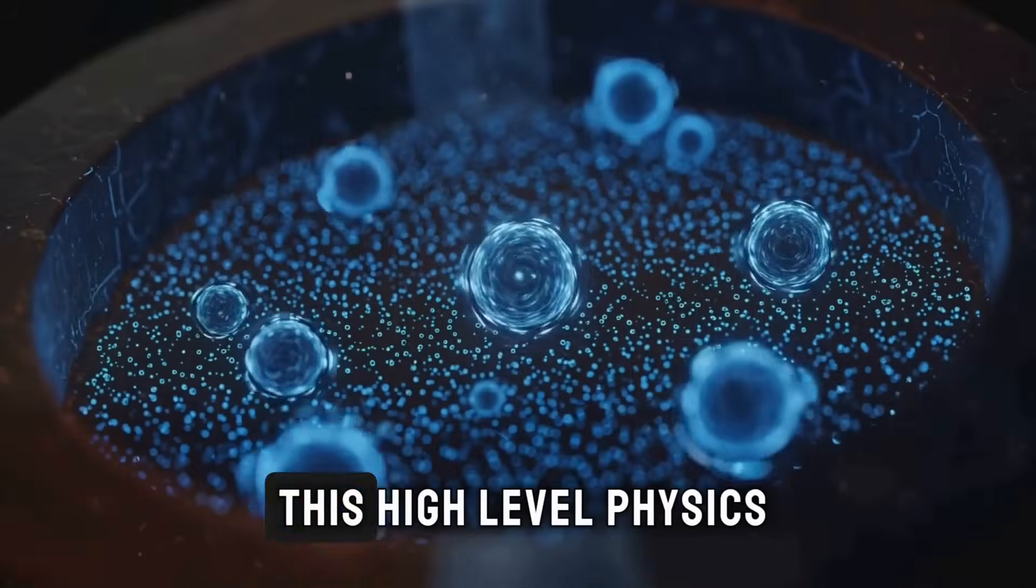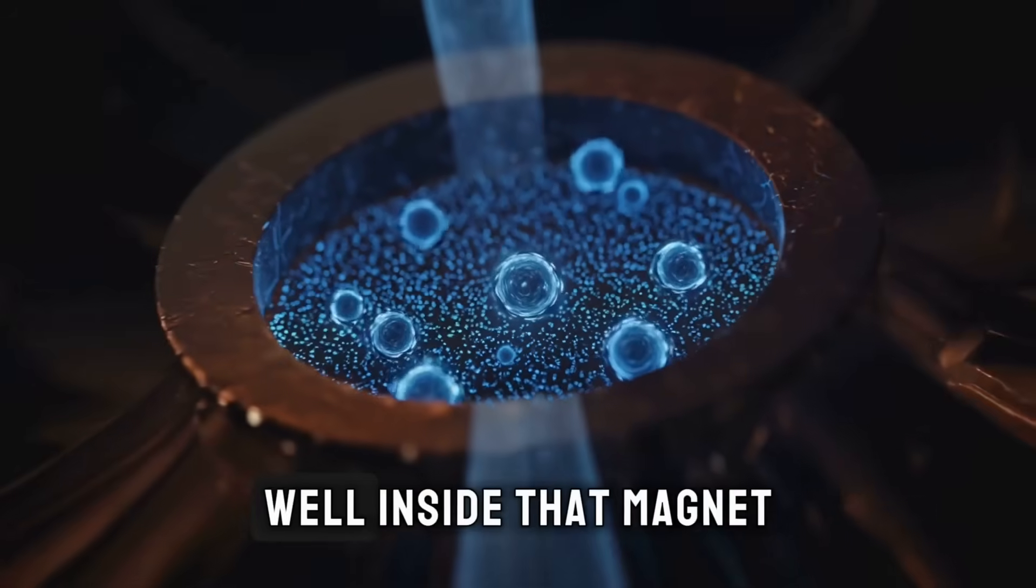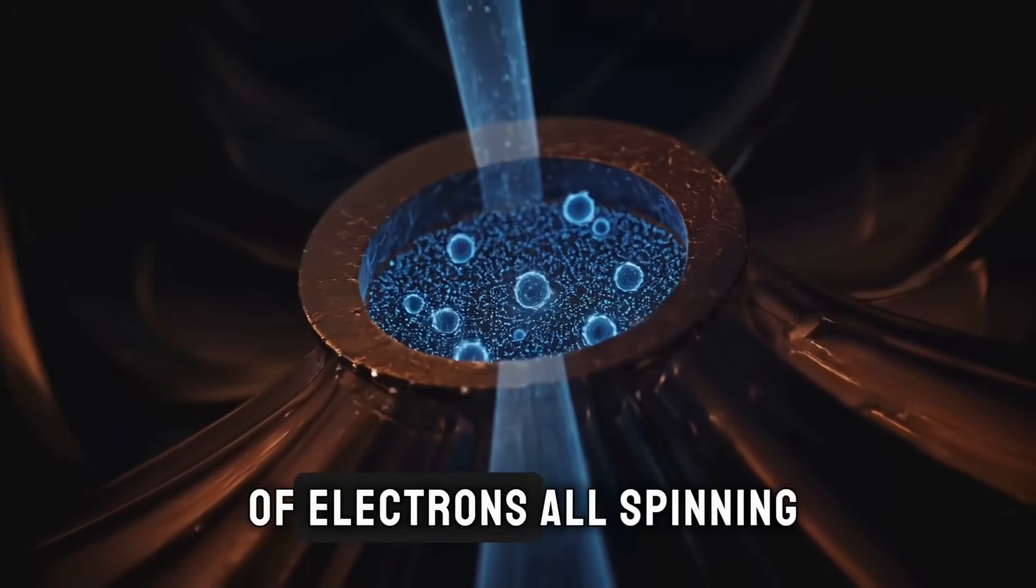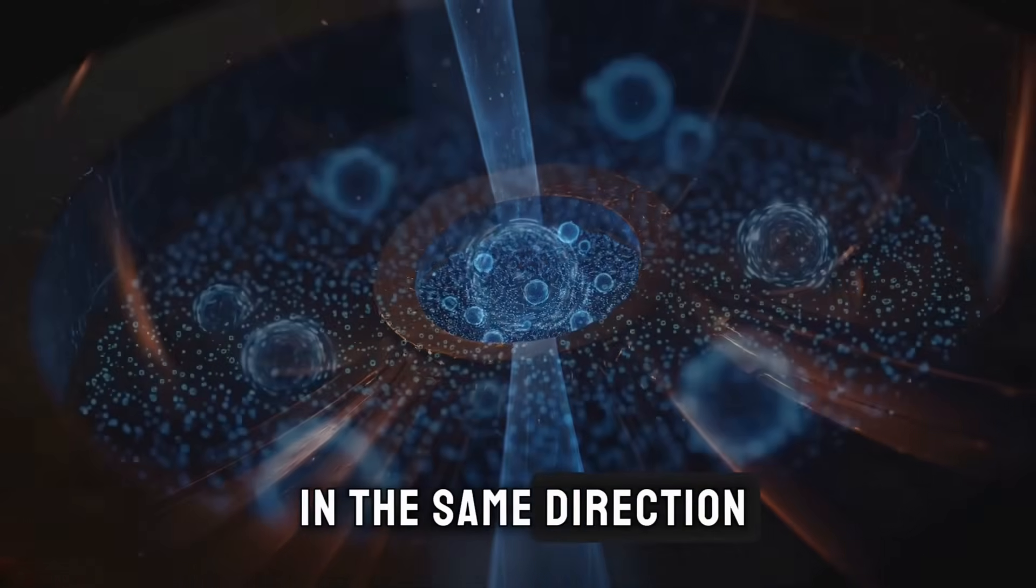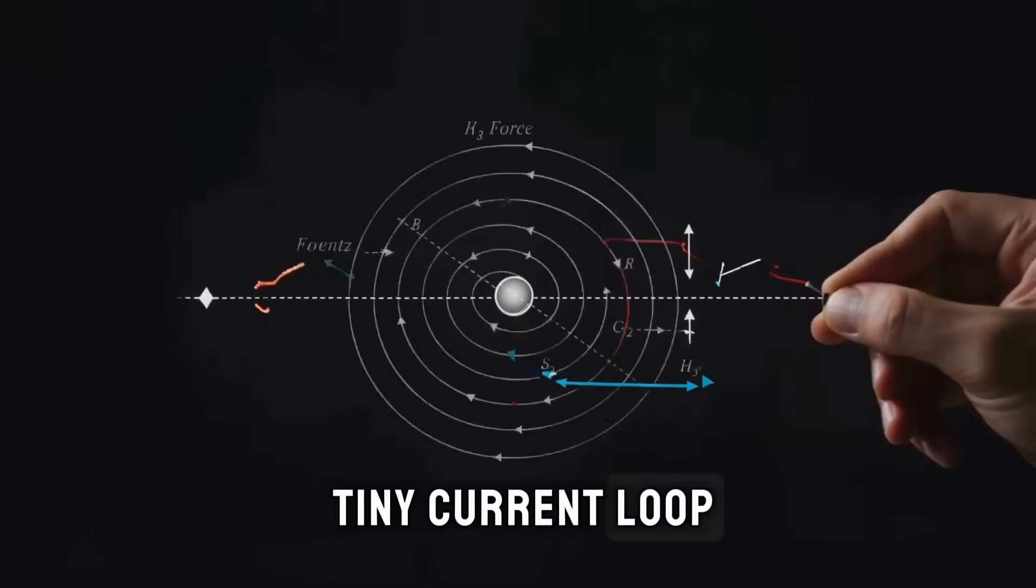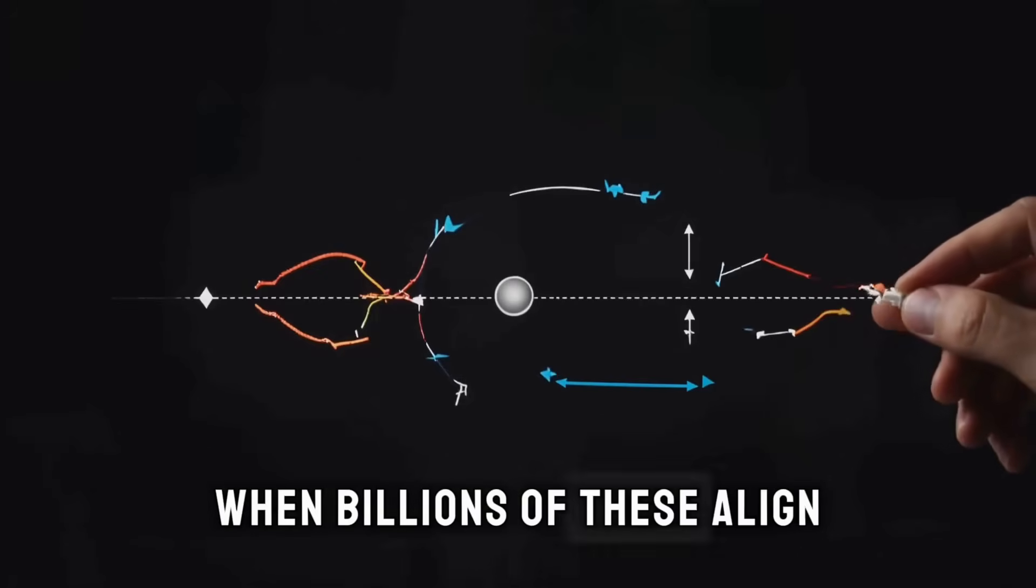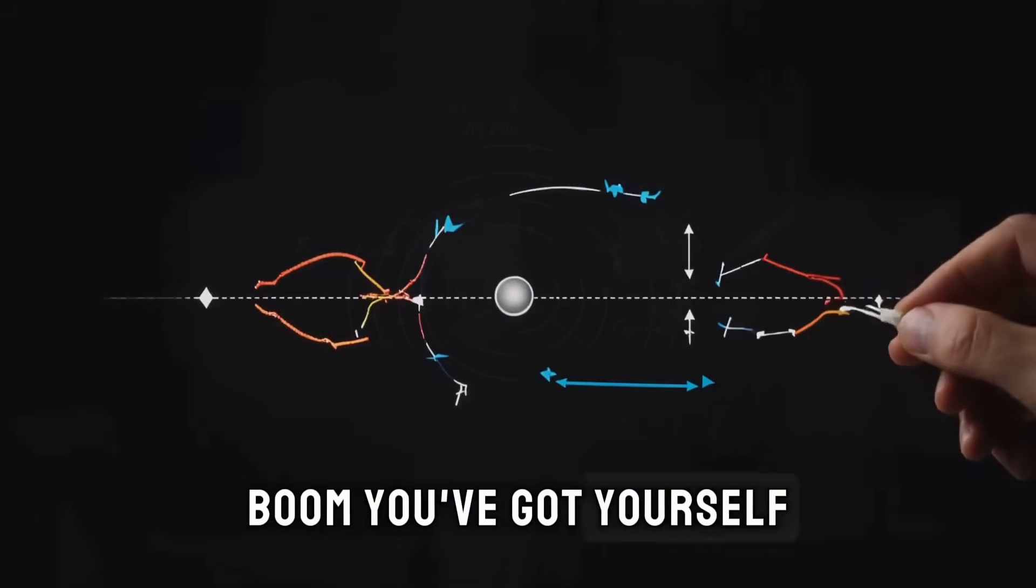So how does all this high-level physics translate to that magnet holding up your kid's drawing? Well, inside that magnet, you've got a bunch of electrons all spinning in the same direction. Each of these spinning electrons is like a tiny current loop, creating its own magnetic field. When billions of these align, boom, you've got yourself a magnet.